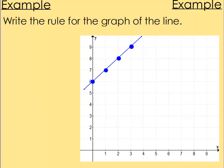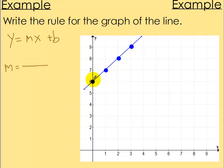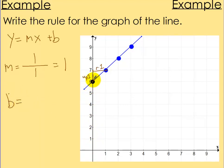Let's try some examples. Write the rule for the graph of the line. The form is y equals mx plus b. For m, going from one point to the next, it looks like it's going up 1 and right 1. So m equals 1 over 1, which simplifies to 1. For b, where it crosses when x equals 0, that happens right at this dot, at 6. So b equals 6. The final rule is y equals x plus 6.